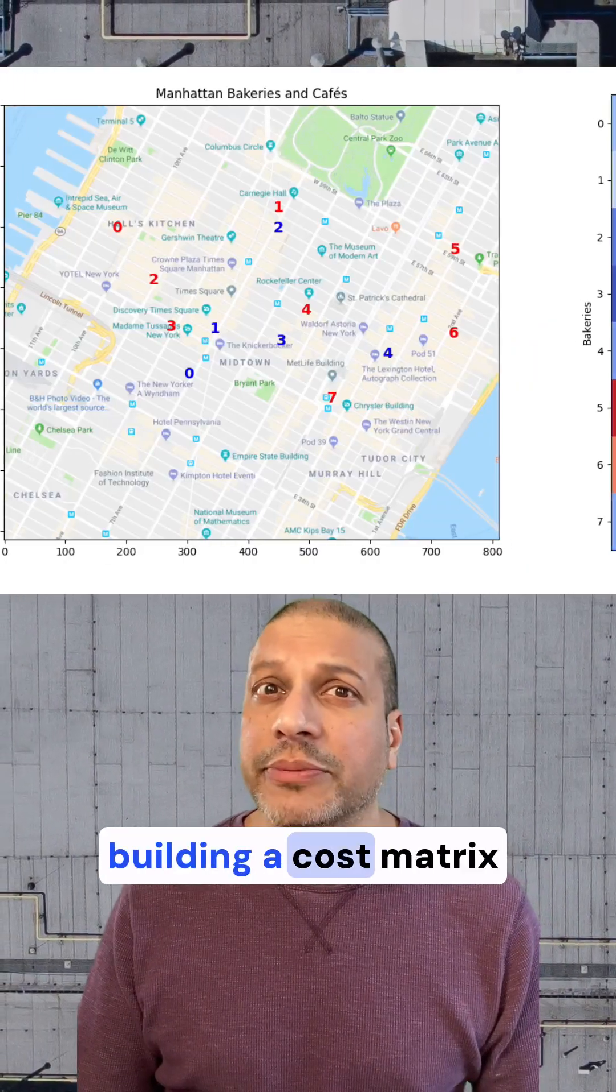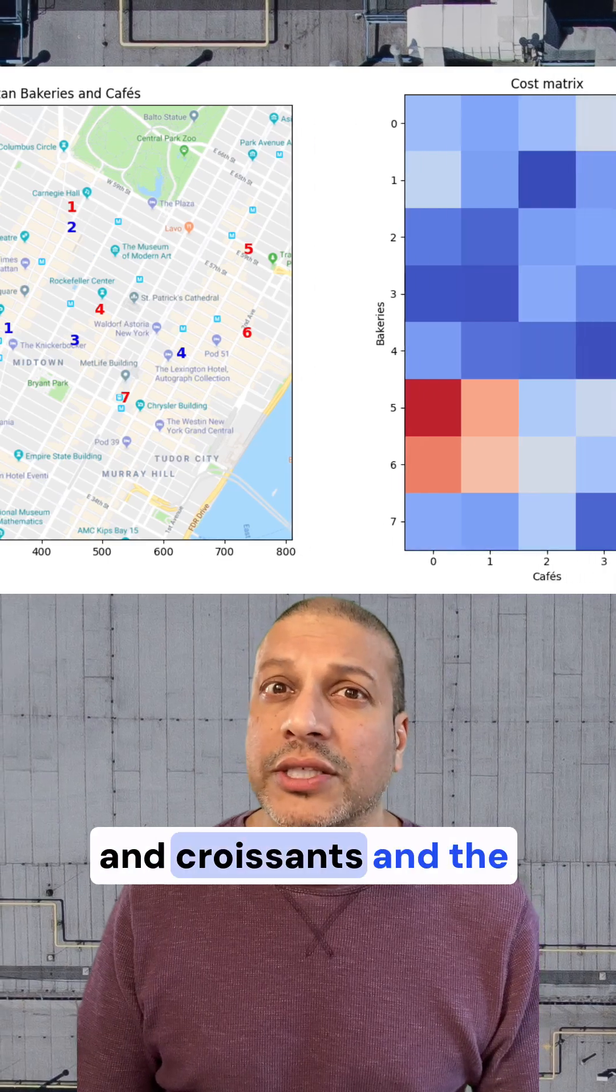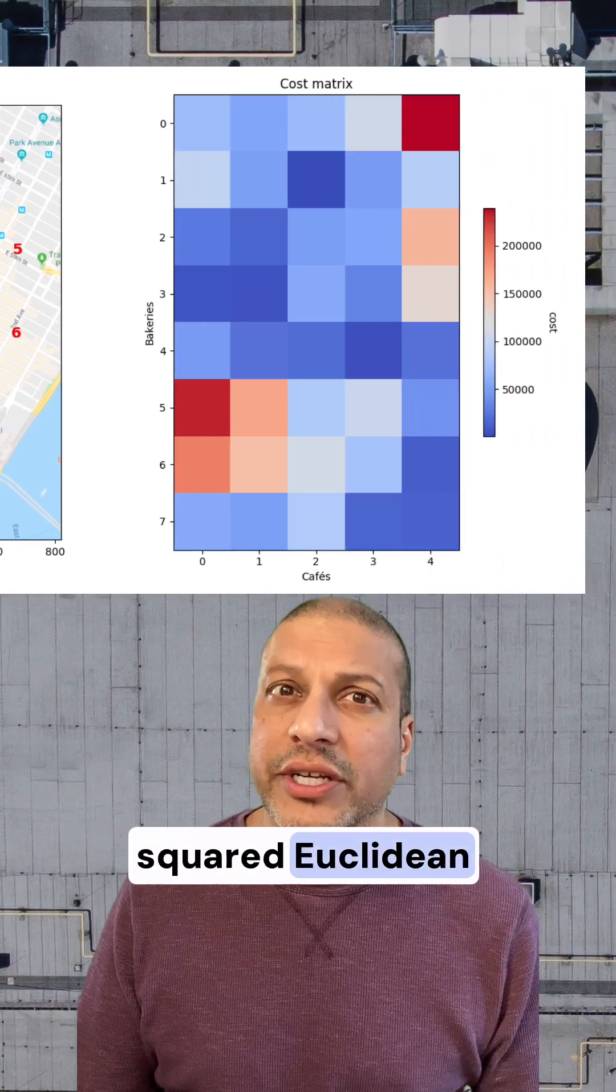The first step is just building a cost matrix between our bakeries and croissants and the distance required. We're just going to use the squared Euclidean distance here.